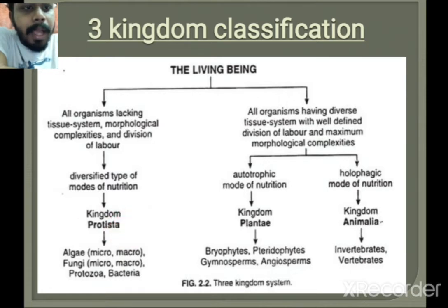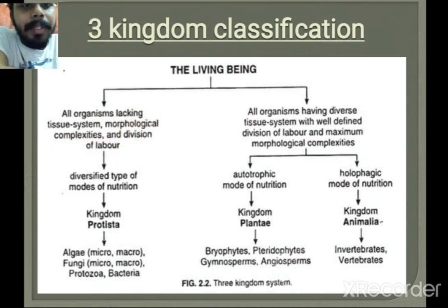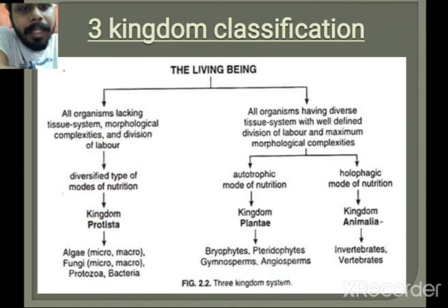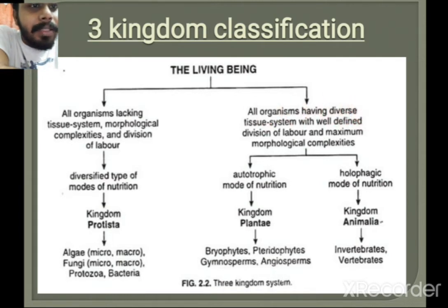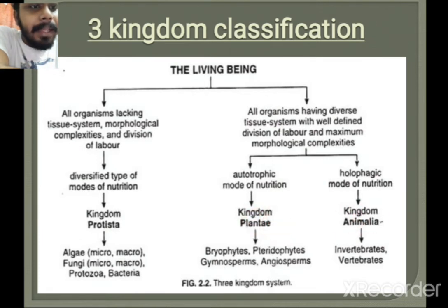In the three kingdom classification system, the new kingdom is Protista, alongside the previously existing Plantae and Animalia. All organisms lacking tissue systems, morphological complexities, and organelles are placed in the Protista kingdom. Organisms having diverse tissue systems, well-developed organelles, and maximum morphological complexity are divided into the Plantae and Animalia kingdoms.